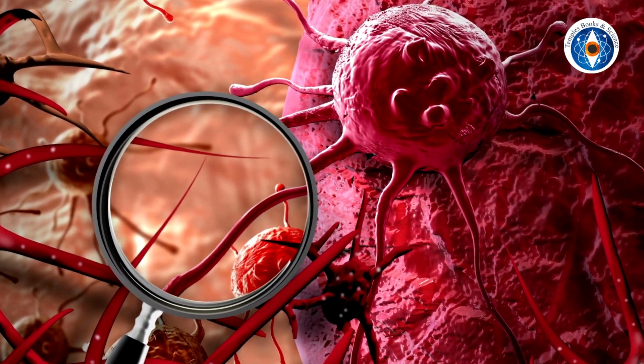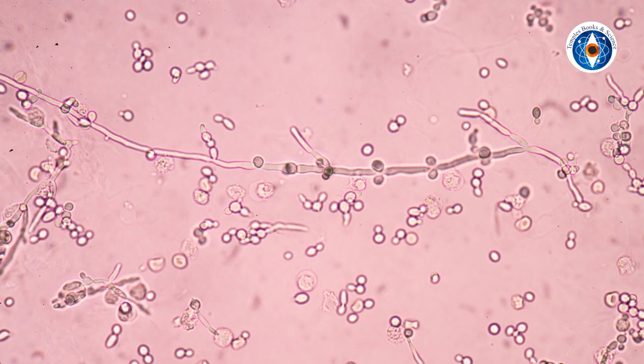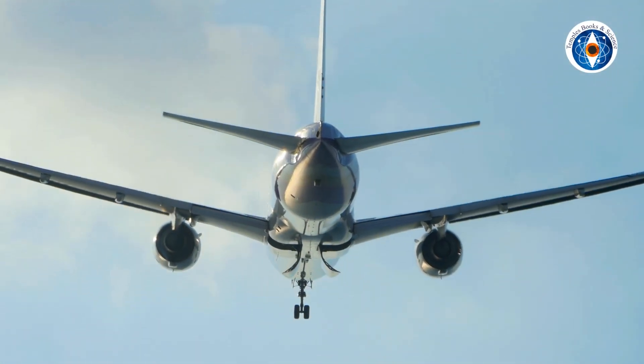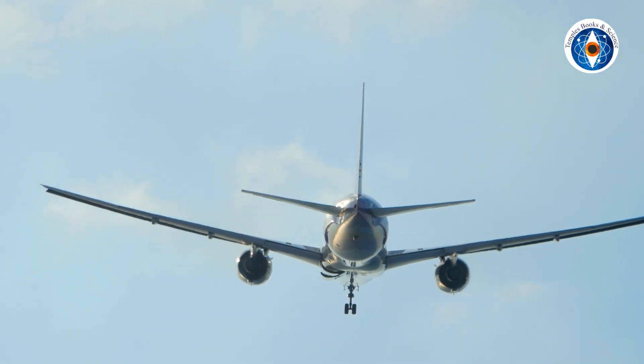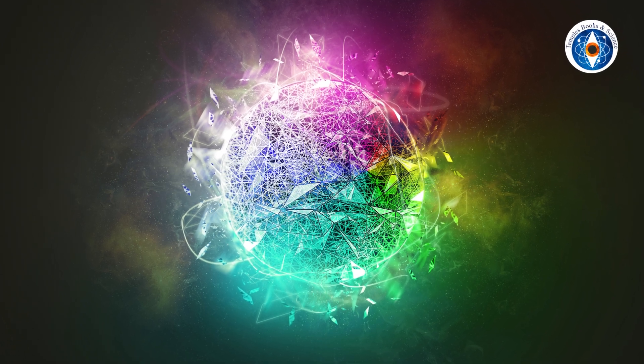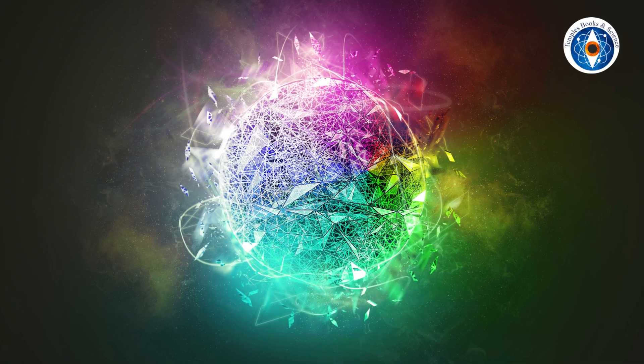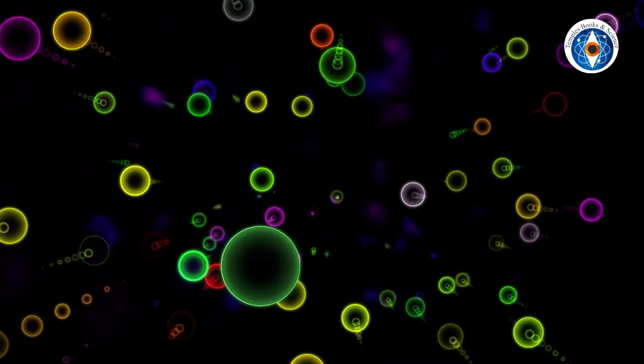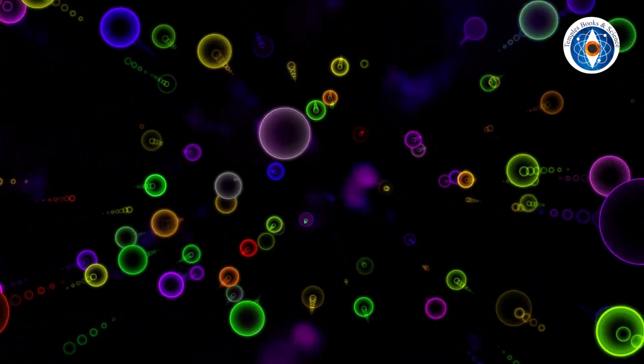Every cell in nature is a thing of wonder. To build a basic yeast cell, for example, you would have to miniaturize about the same number of components as a Boeing 777 jetliner and fit them into a sphere just 5 microns across. Then, somehow you have to persuade the cell to reproduce. This is nothing compared to a human cell.